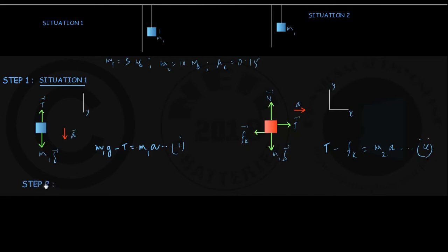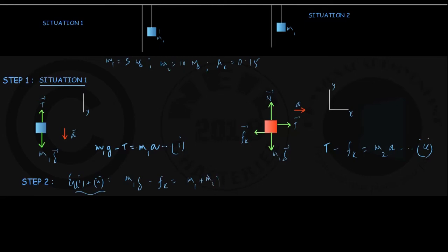In step 2, we add up equations 1 and 2. The tension T cancels out, giving: m1g − Fk = (m1 + m2)·A. In the initial situation with only two blocks, this acceleration is positive and the system keeps moving — block 1 downwards and block 2 towards the right.